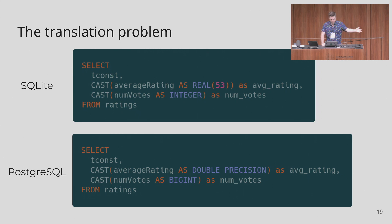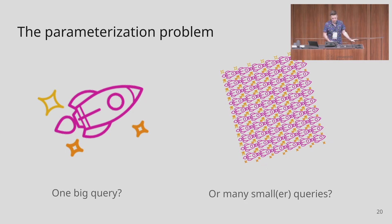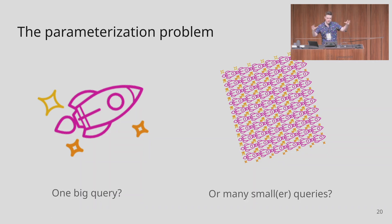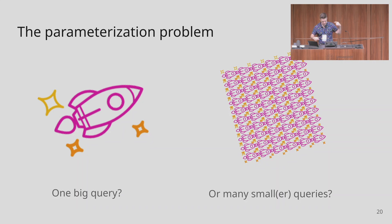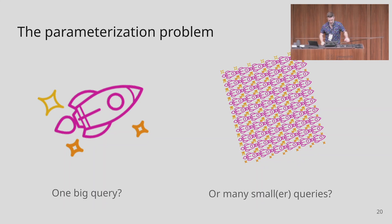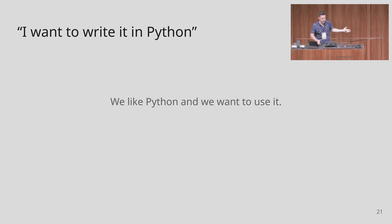There's also the parameterization problem. Are you running one big query or executing a thousand small queries with varying parameters? Say you're looking for movies with different keywords — how do you loop over that SQL? Generate a big pile of UNIONs? Execute them one by one? If you send a thousand queries and the thousandth has a typo, you'll wait for all 999 prior ones to execute before that last one fails.